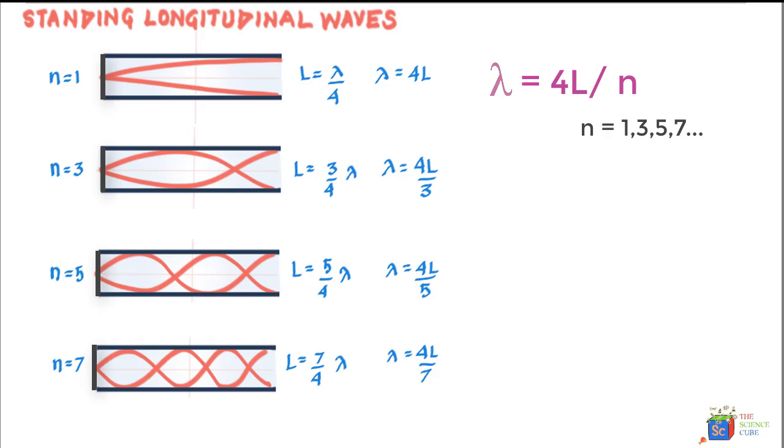So, the corresponding resonant frequencies are then, if we take F is equal to V upon lambda, F equals N V upon 4L for N equal to 1, 3, 5 and so on. So, you see, you will get odd harmonics only when the pipe is open at one end and closed at the other. In other words, you cannot set up 2nd, 4th, 6th or even harmonics in such a pipe.